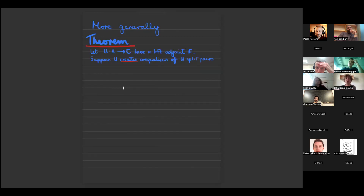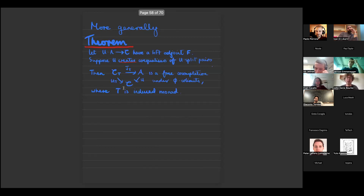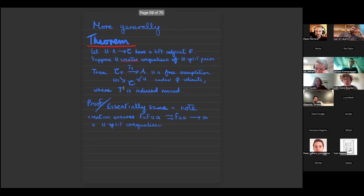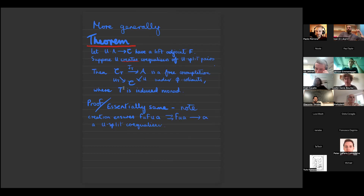More generally, suppose you have a forgetful functor with a left adjoint that creates co-equalizers of u-split pairs, as in Beck's theorem. Then you can take the induced monad and look at the induced map from the Kleisli category — that's also a free co-completion of the Kleisli category. The proof is almost exactly the same: the key step uses that the depicted co-cone is a co-equalizer because we assumed u creates co-equalizers, so it reflects them, and it's sent to a u-split one.